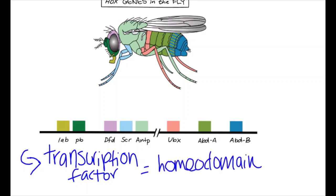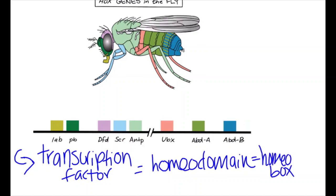Each of these transcription factors contain a DNA-binding protein called the homeodomain, which in turn is encoded by a segment of DNA called the homeobox, also known as our Hox genes.